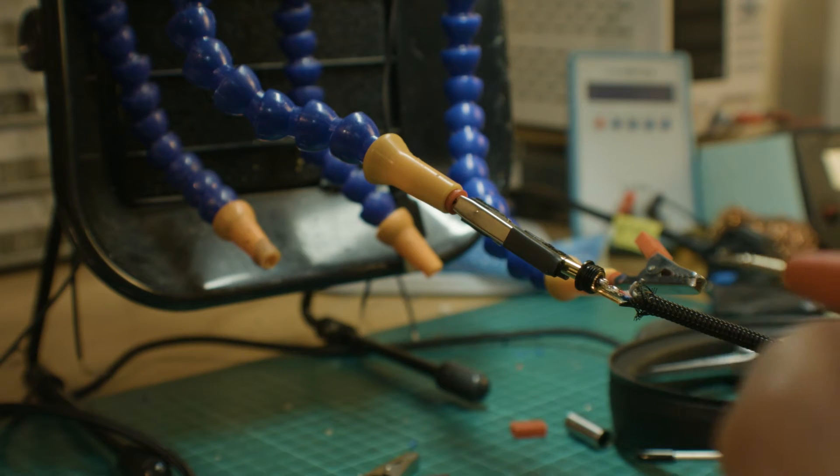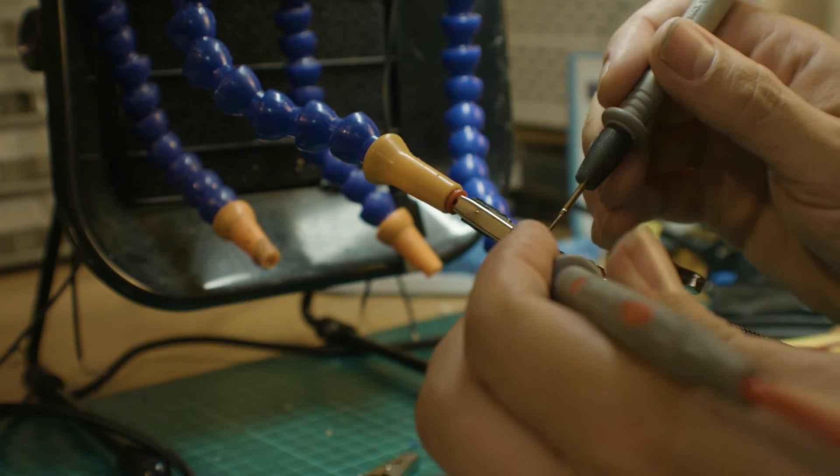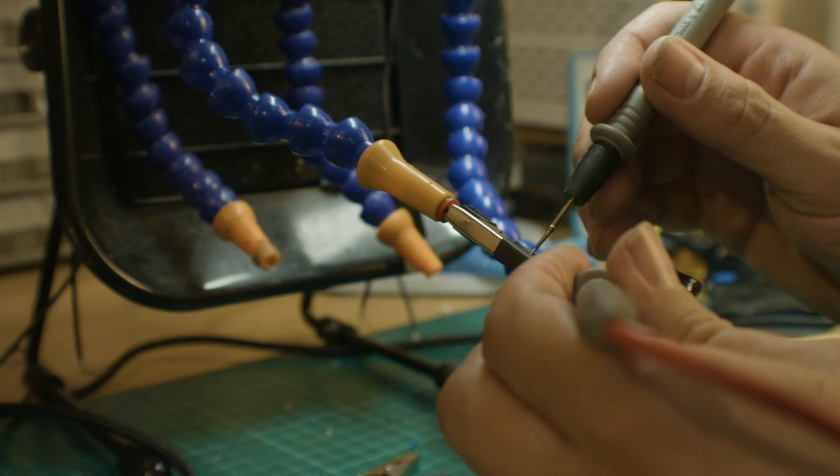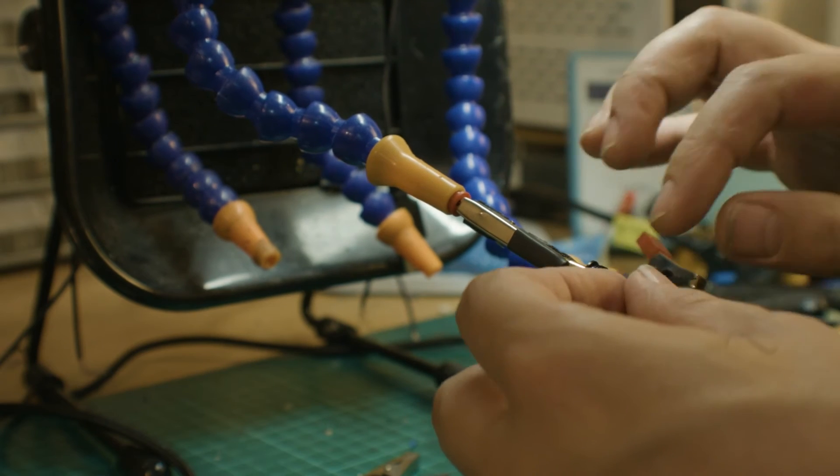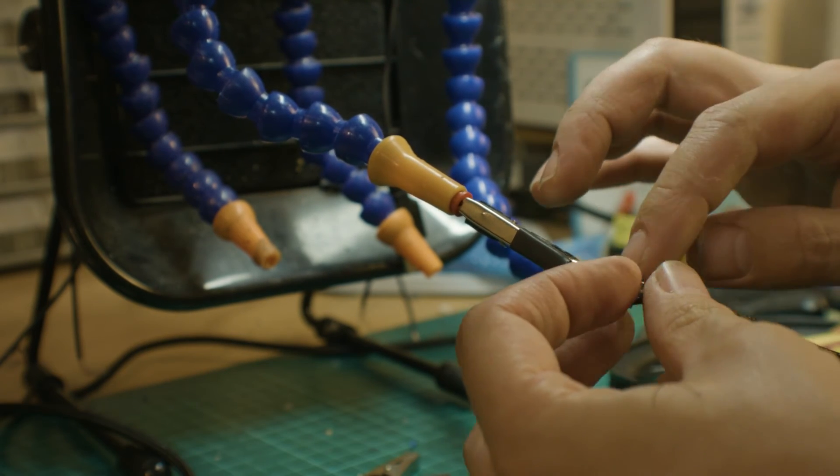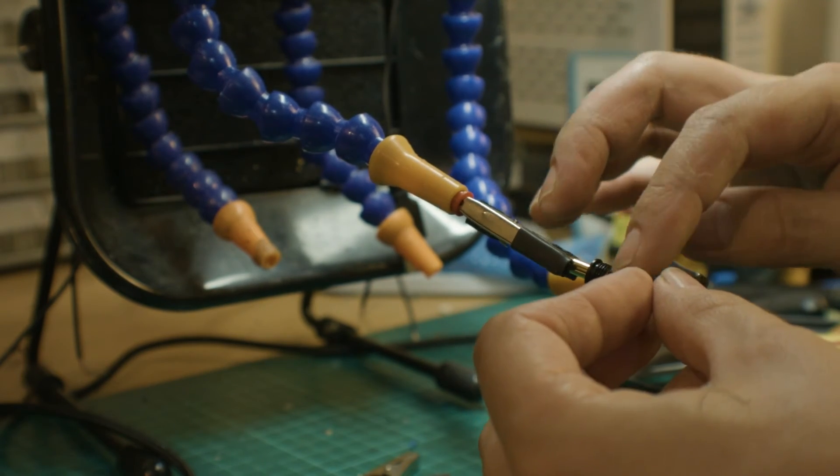Okay, so now we're going to just use the multimeter to figure out which one's the positive and negative. Okay, so this side is positive. The right-hand side is negative. So I'll do the positive first.